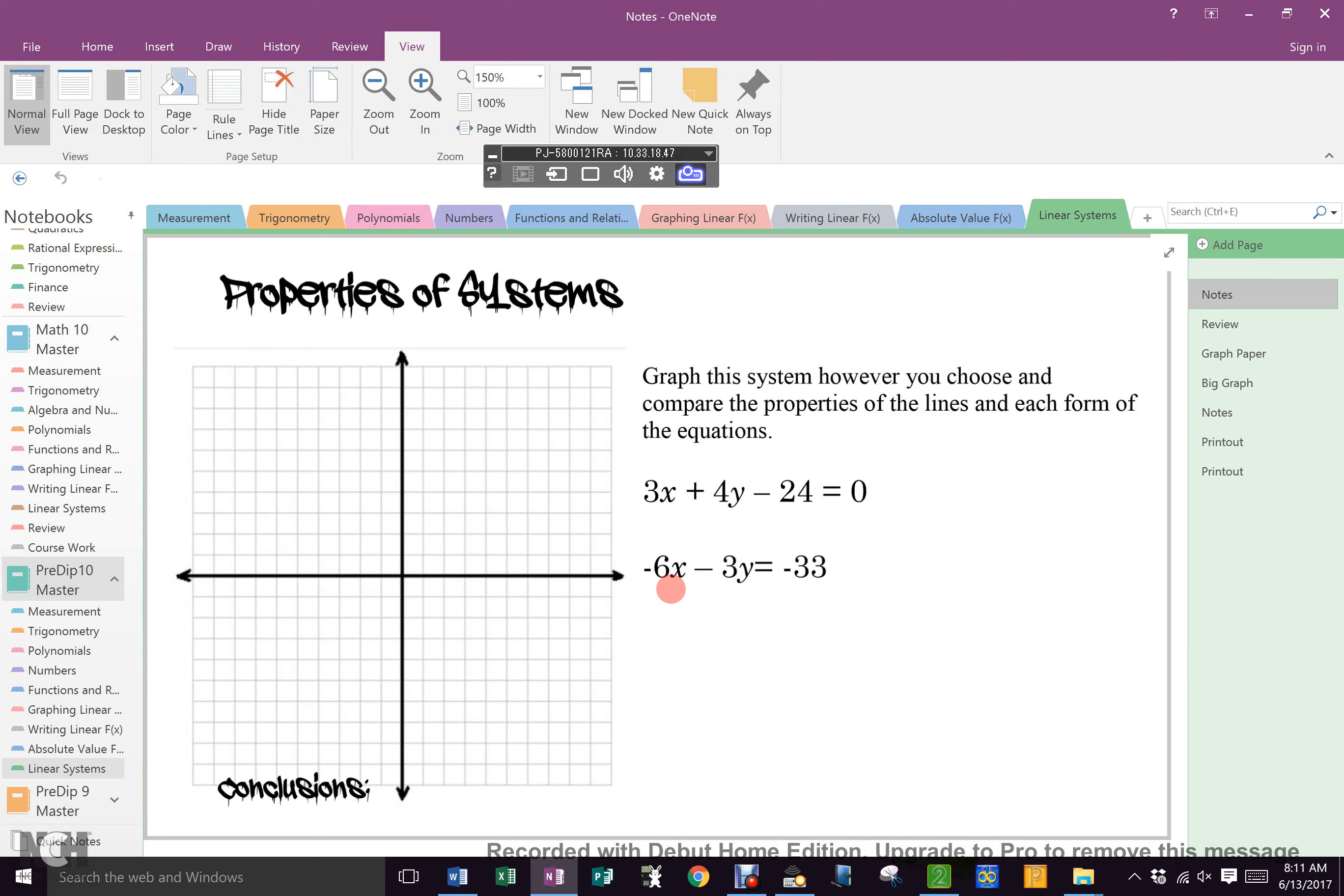When I say however you choose, what do I mean? You can use intercepts, point-slope form, or slope-intercept form. You can do one with slope-intercept form, one with point-slope form, one with intercepts. I don't care. Just graph it. Go.